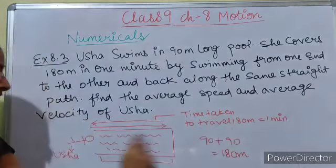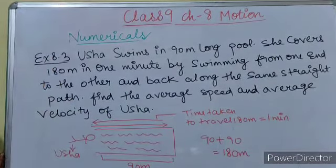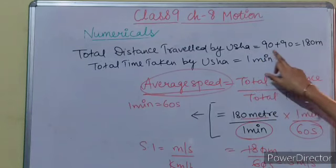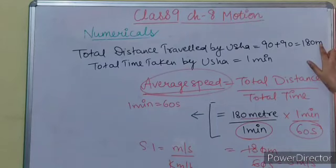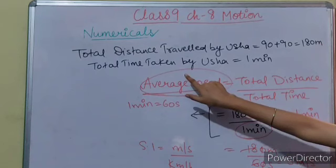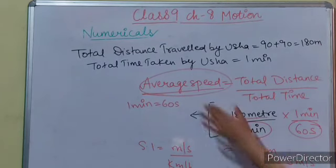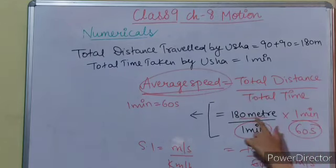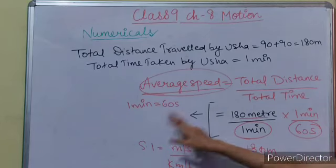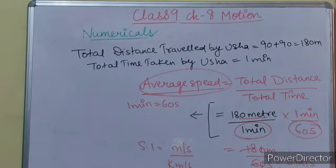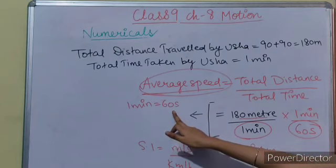Usha travels 180 meters in one minute. Total distance is 90 plus 90 equals 180 meters. Average speed equals total distance divided by total time taken, which is 180 meters divided by 1 minute. Since speed should be in meters per second, we convert 1 minute to 60 seconds. So average speed equals 180 divided by 60, which is 3 meters per second.